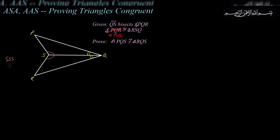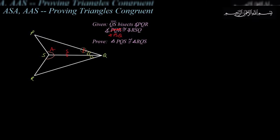Now we know there are only four ways to prove triangles congruent: SSS, SAS, ASA, and AAS — all needing at least one side. We have some angles, but we need a side. Looking at the diagram, segment SQ is common to both triangles. By the reflexive property, that side is congruent to itself. So we have angle, side, angle — and since that doesn't spell anything bad, by angle-side-angle we can prove these two triangles congruent.